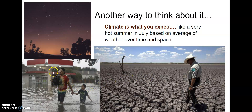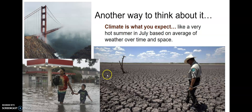You also have rainy seasons — for example, in Mexico it usually rains in February or sometimes in August, depending on the climate and location. And right here, if you recognize this, it's San Francisco — the climate there is usually always foggy.